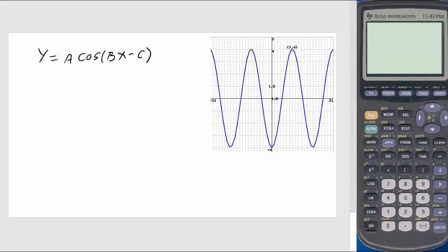That means you have a reflection, so then your A will be negative. You can see the amplitude here. This y length is 4, so your A is negative 4.